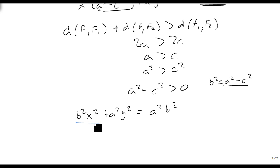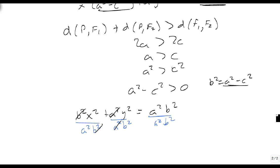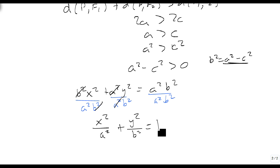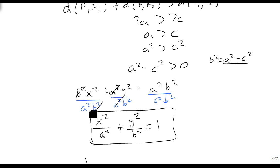Dividing everything by a²b² gives the standard form: x²/a² + y²/b² = 1. That's the standard form of an ellipse — it's a lot of work to get there. You won't have to repeat this derivation; I just want you to have seen it once.